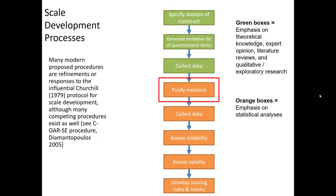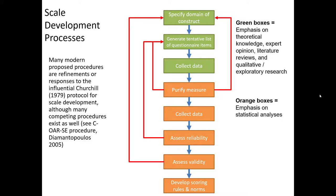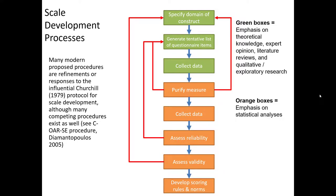Once you've reduced your number of scale items even further, you'll collect another larger set of data to work towards the final set of questionnaire items for your scale. At this stage, you'll engage in steps six and seven, which is assessing the reliability of your instrument and assessing the validity of your instrument. There's a variety of different statistical procedures that help you assess how reliable and how valid your tool is. It's likely that at any one of these stages you're going to run into some problems, indicated by the red feedback loop lines, sending you back to earlier parts of the scale development process. If you get through this entire process, the very last step is developing scoring rules and norms.